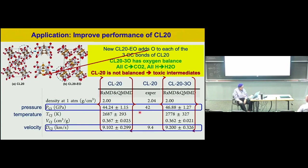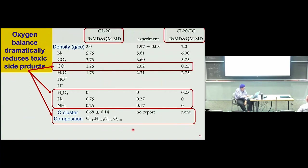We had the idea that we can improve CL-20 by adding an oxygen to each of the carbon-carbon bonds of CL-20 to get a carbon-oxygen-carbon linkage. Using our methodology of predicting the C-J point to calculate the performance, the performance is about 5% better in pressure and several percent better in detonation velocity. But the key point is that there are no toxic side products — CL-20 has toxic products like carbon clusters and various obnoxious materials, but with proper oxygen balance we get none of those.